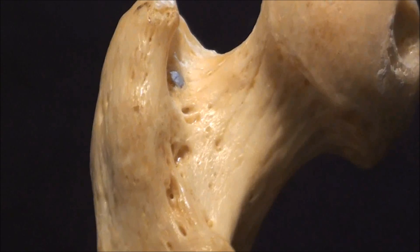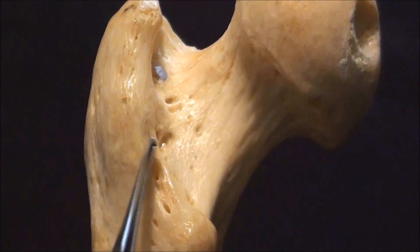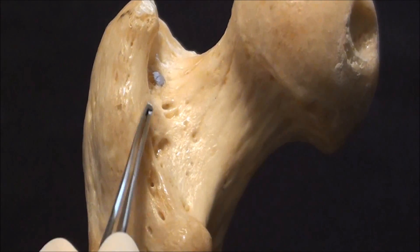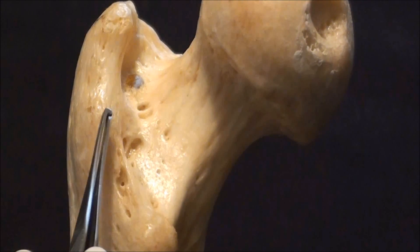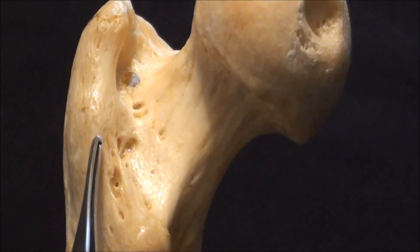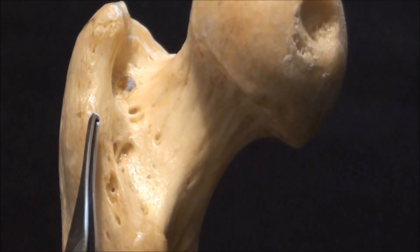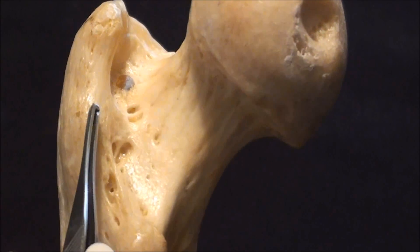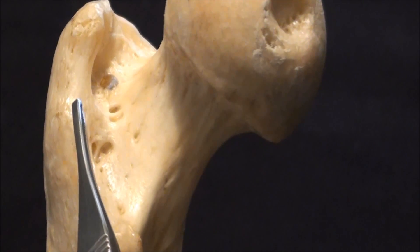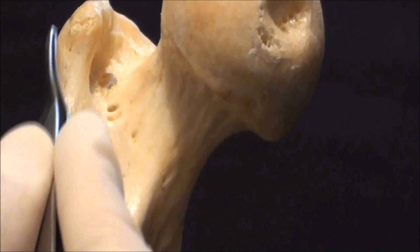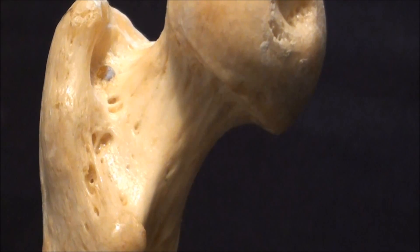On the inter trochanteric crest we have also a little extra elevation here that is called the quadrate tubercle. Quadrate tubercle is attachment point for the quadratus femoris, one of the small muscles that converge around the hip joint also known as the intrinsic muscles of the hip whereas other muscles such as obturator internus, obturator externus, gemeli are predominantly going to congregate on the surface of the greater trochanter of the femur.